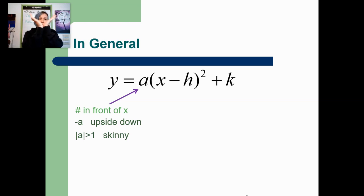If A is greater than 1, the parabola will get skinnier. And if A is less than 1, the parabola will get wider. And then if A equals 1, then it's just a normal size parabola.